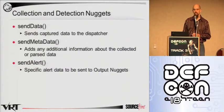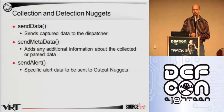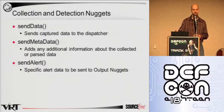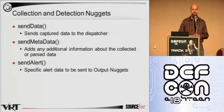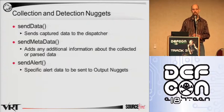Collection and detection nuggets: the SMTP parser nugget is a detection nugget, but one of the key things it does is get data in, split it into pieces, and send it back — as all detection nuggets can do. They both share Send Data and Send Metadata for providing data back to the system and the dispatcher. Detection nuggets also have Send Alert, which sends an alert handled by the dispatcher and sent to the output nuggets.